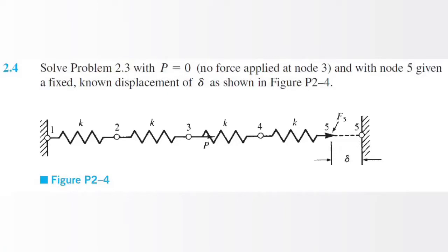Let's get started with problem 2.4. It's a continuation of 2.3, just a little bit modified. There's no force this time at node 3, and node 5 is fixed with a displacement. The displacement is known, but it's not given a number, so we have to do the problem in terms of a variable.